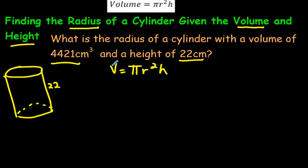Now the volume is given, so we're going to write that down: 4,421. Pi is 3.14, the radius we do not know, and the height we do know, they gave it to us, it's 22, it's 22 centimeters.